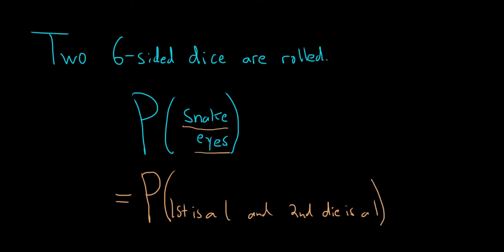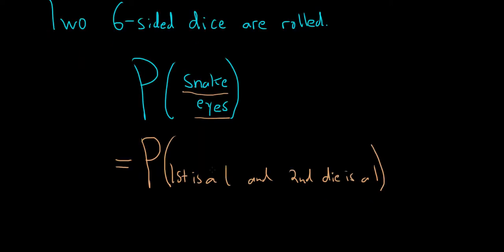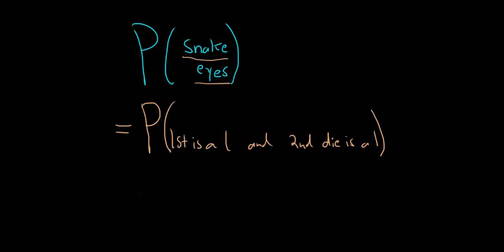If we're rolling two dice, snake eyes means they're both ones. We can think of that as the first being a one and the second being a one. The reason this is important is because we see that the word 'and' is here, and 'and' means multiply.